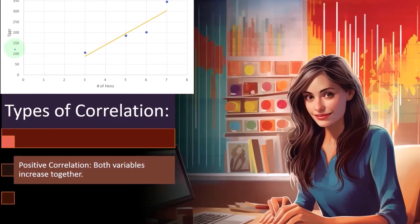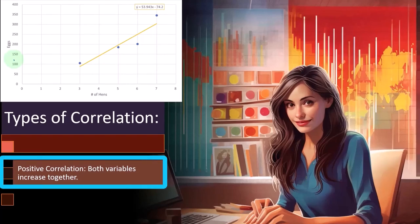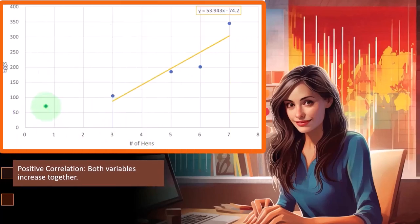We have the positive correlation where both variables increase together. In this example, we have hens and eggs. These are our two different data sets: how many hens we have and how many eggs they are producing, in a year for example. So in this case, when we plot this out,